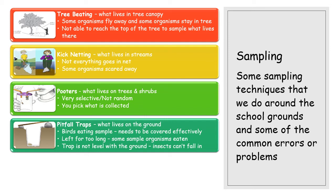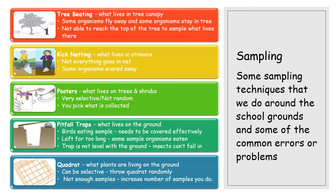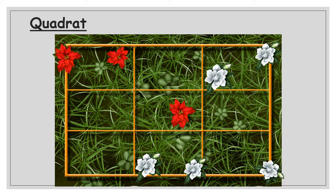If the trap isn't level with the ground, things can't just fall in randomly, which is another problem. The last technique is a quadrat, which is about sampling what plants live on the ground. It can be selective, so you need to make sure you throw your quadrat randomly. Not enough samples is often a problem, so you need to throw it quite a number of times to make it a good sample of the ground.